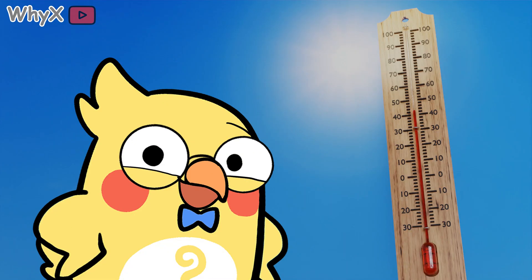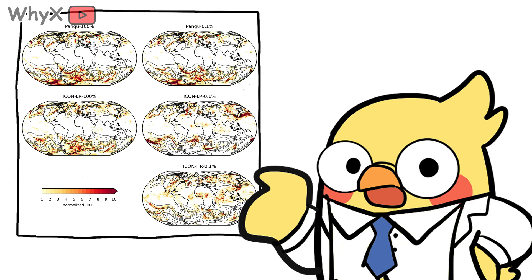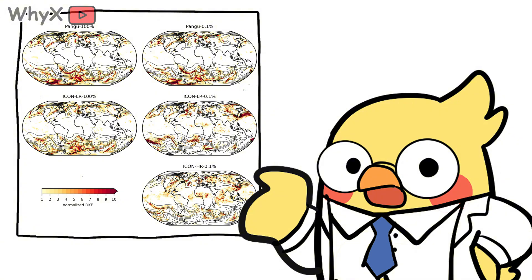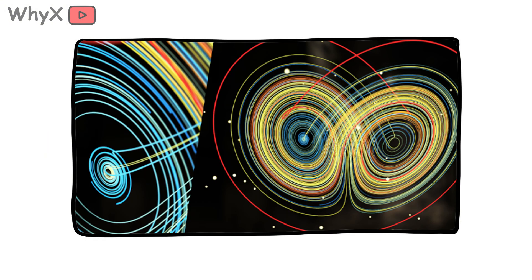Now expand this idea to climate. Some people confuse weather — chaotic short-term — with climate — long-term statistical patterns. The butterfly effect doesn't mean we can't predict climate trends; it means we can't know the exact path of every storm. Climate models deal with averages: warming trends, sea-level rise, shifts in rainfall. The distinction matters because critics sometimes misuse the butterfly effect to dismiss climate science. But in truth, the unpredictability of weather and the predictability of climate are two sides of the same chaos coin.